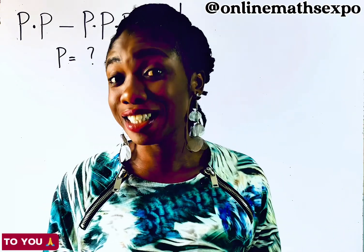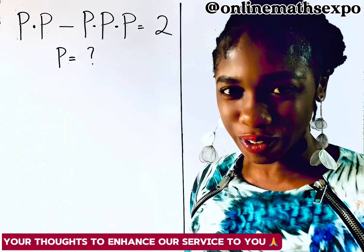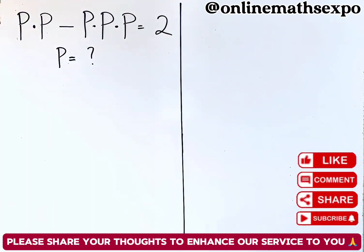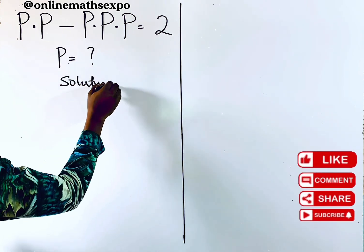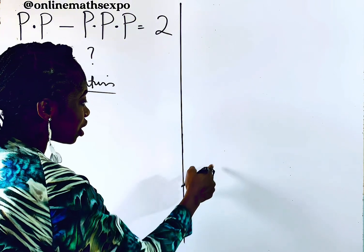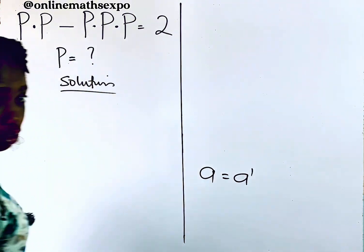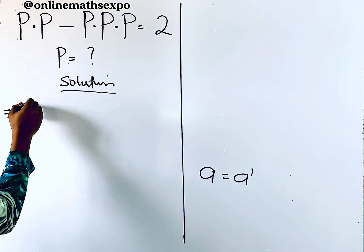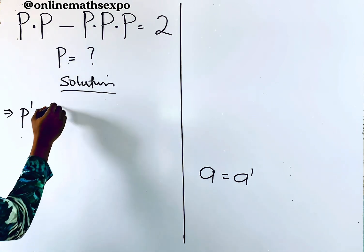Let me teach you how to solve this tricky equation. We're going to begin with the solution. Remember that each time you have a variable without any power, it is the same as having the power of one. So this is the same as p to the power of one multiplied by p to the power of one.